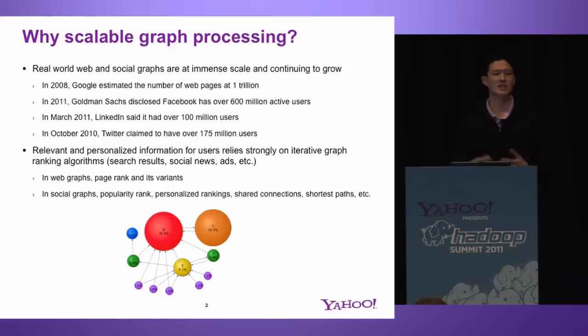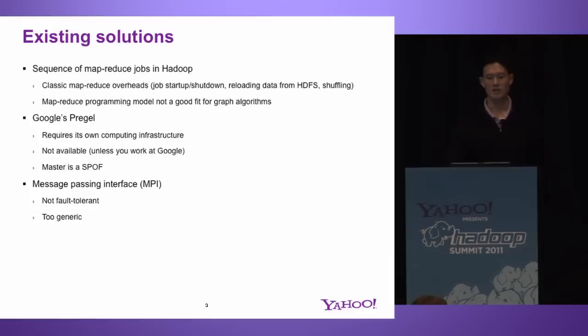Some examples in web graphs: obviously PageRank is very famous, and there are variations of it that are used. In social graphs, there's a lot of other things you might want to compute — shared connections, shortest paths, max cliques, personalized rankings, that kind of thing.